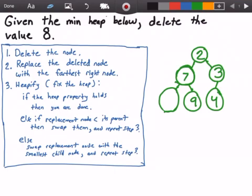So I'm going to erase it here. Next we want to replace the deleted node with the farthest right node, which is the node that contains the value 4. I'm going to get rid of the node here because we're replacing 8 with the node that contains the value 4.